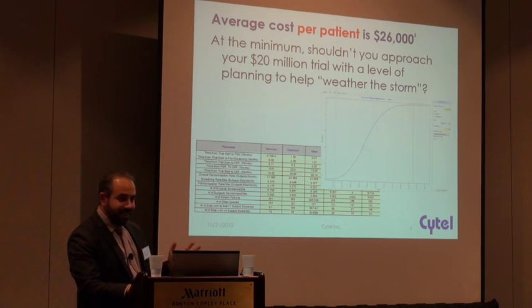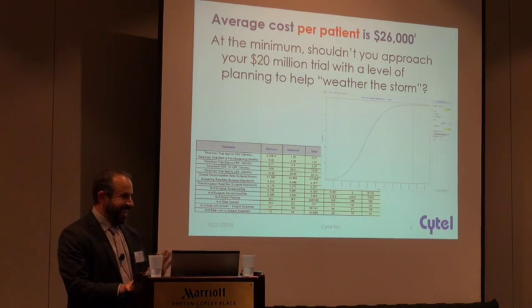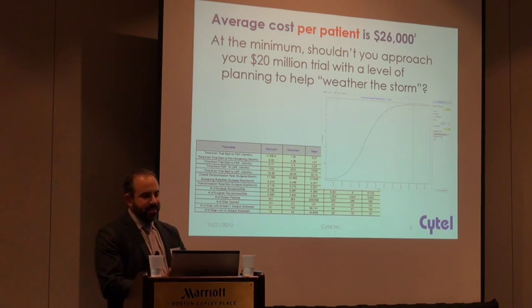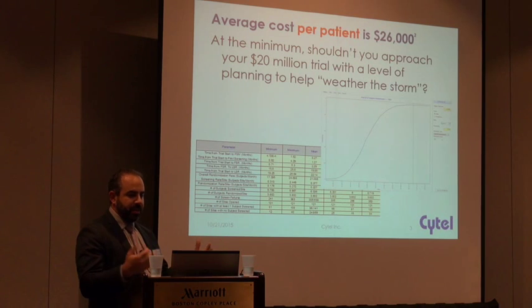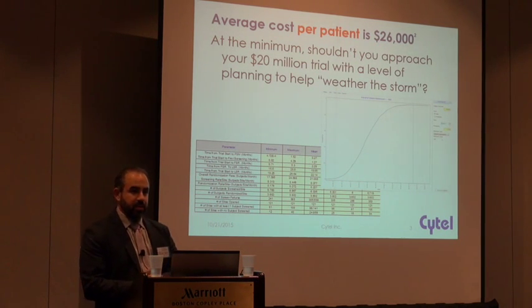Conveniently, the average cost per patient is $26,000 as well. So the argument is: at a minimum, shouldn't you approach your $20, $30, $40 million dollar trial with the same level of planning to help you weather the storm?